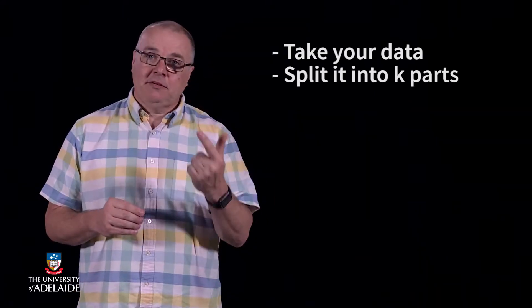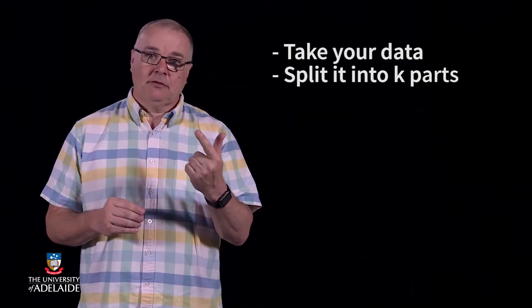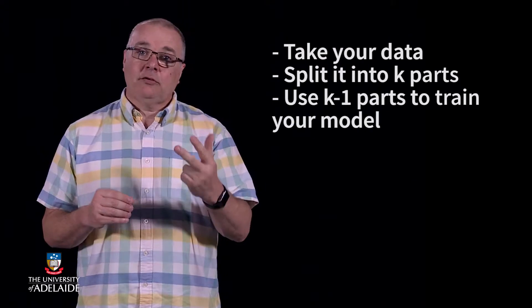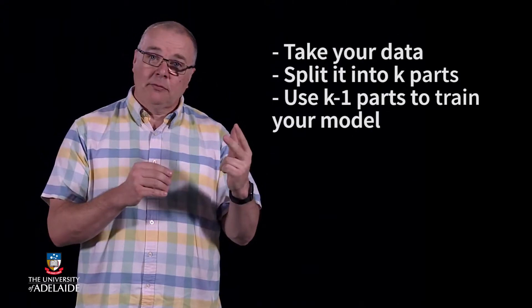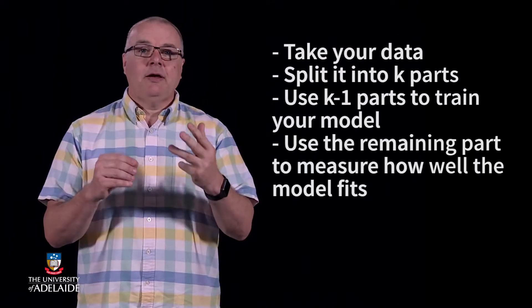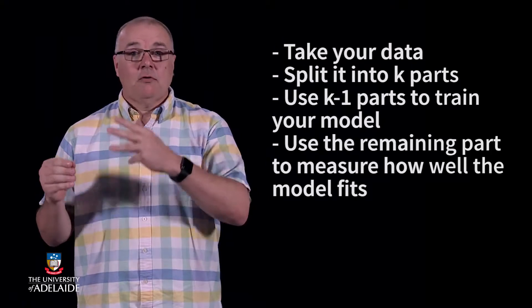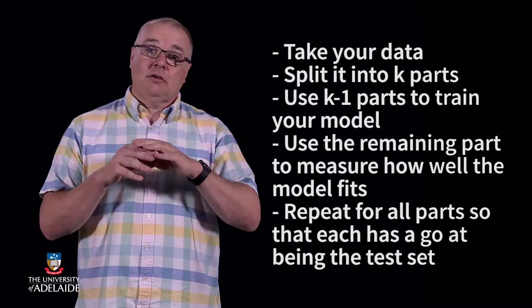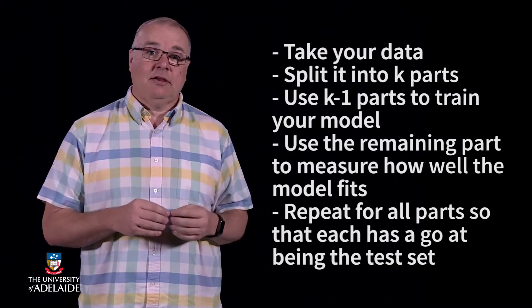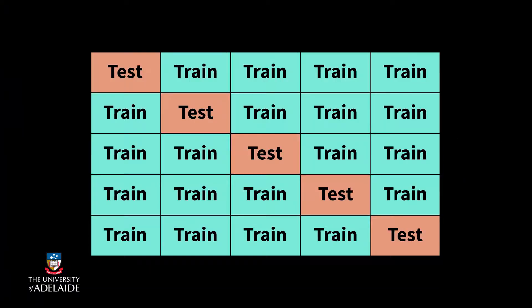The idea is simple. Take your data, split it into k parts. Use k-1 parts to train your model, and use the remaining part to measure how well the model fits. Repeat so that every part has a go at being the test set. Let's have a look at my excellent figure showing it for five-fold cross-validation.